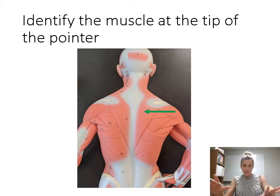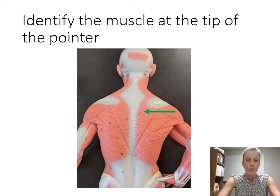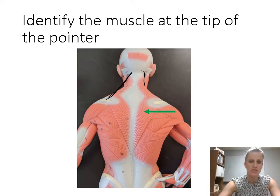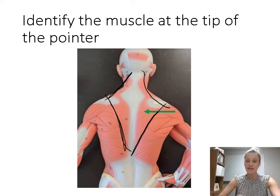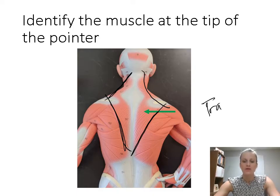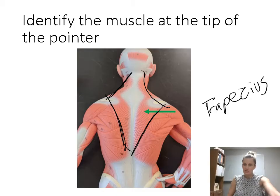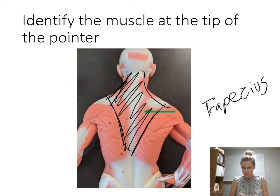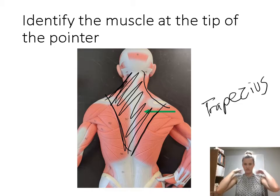Now we're moving down to the back. When we look at the back, we have two very superficial muscles. This one up here is shaped like a kite or a trapezoid — go back to your geometry, that's a trapezoid — so we call it trapezius. There are other deeper muscles underneath, but this right here is the trapezius. When people work out their 'traps,' they're working out that bulge in the back of the shoulders — it's like a ninja turtle bulge.